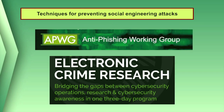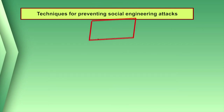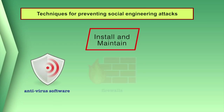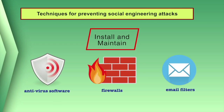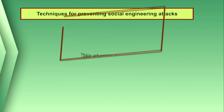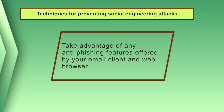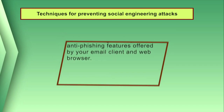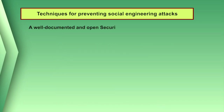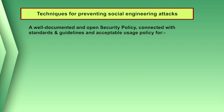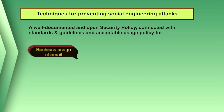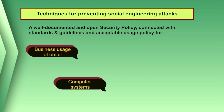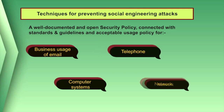Information about known phishing attacks is also available online from groups such as the Anti-Phishing Working Group. Install and maintain antivirus software, firewalls, and email filters to reduce this traffic. Take advantage of any anti-phishing features offered by your email client and web browsers. A well-documented and open security policy connected with standards and guidelines, and an acceptable use policy for business uses of email, computer systems, telephone, and networks is also essential.